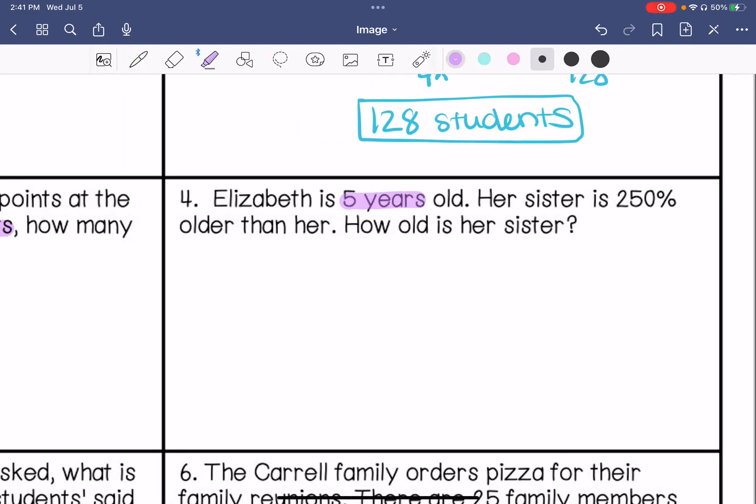Number 4, Elizabeth is 5 years old. Her sister is 250% older than her. How old is her sister? So my part over whole, we know that she is 5, and we don't know how old her sister is.